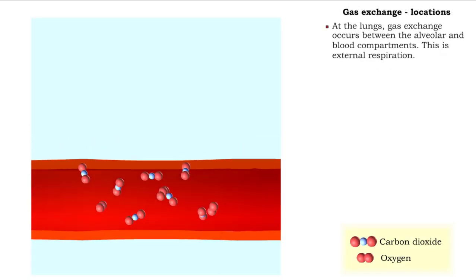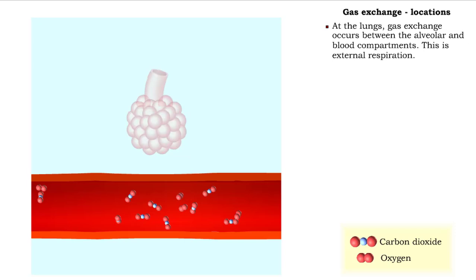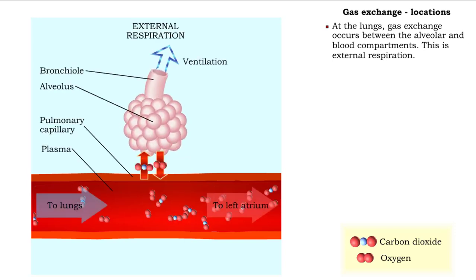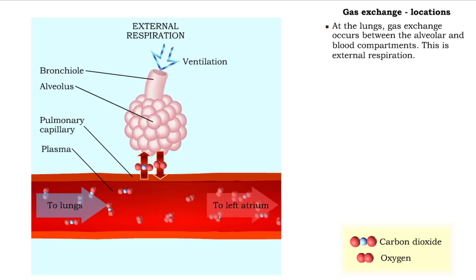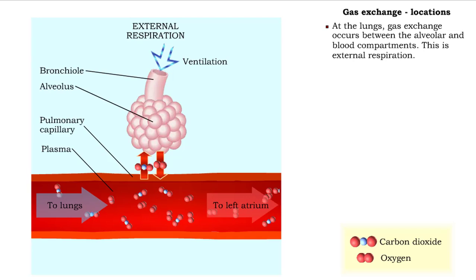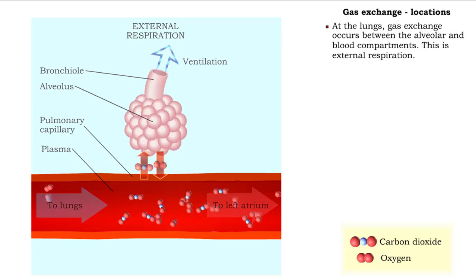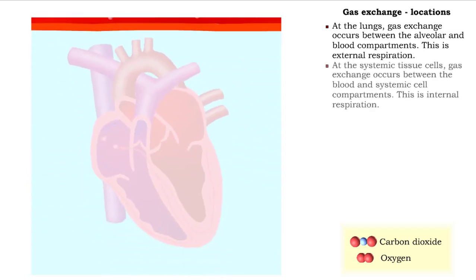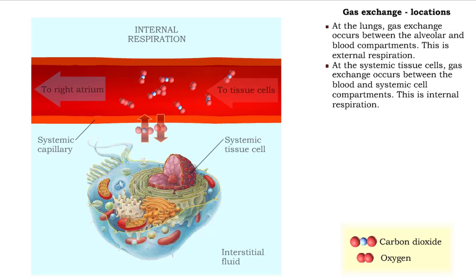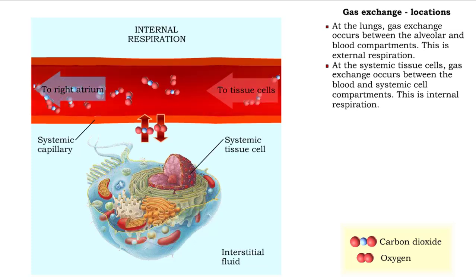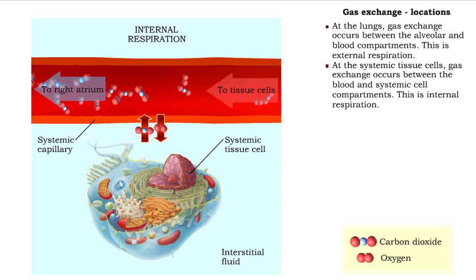At the lungs, gas exchange occurs between the alveolar and blood compartments — this is external respiration. At the systemic tissue cells, gas exchange occurs between the blood and systemic cell compartments — this is internal respiration.